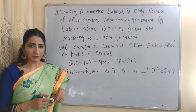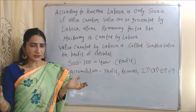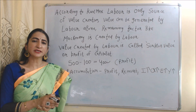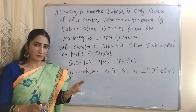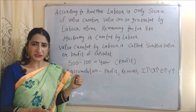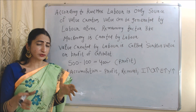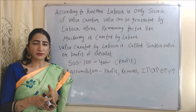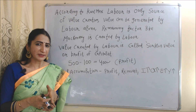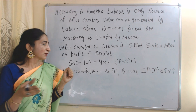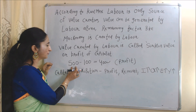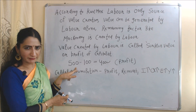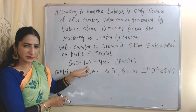According to Marx, labor is the only source of value creation — value is generated by labor alone. Even remaining factors like machinery were also created by labor, so labor is very powerful. The value created by labor is called surplus value. For example, the total value of output produced by labor is equal to 500, but we pay wages to labor equal to 100.